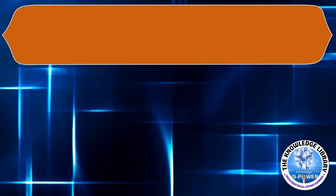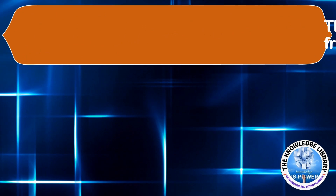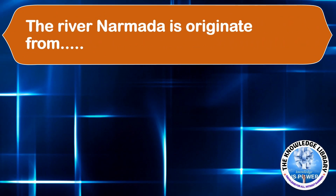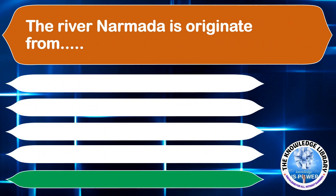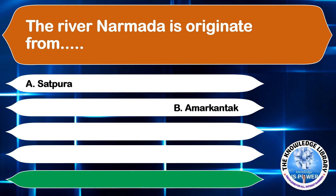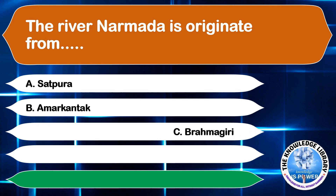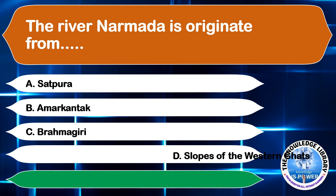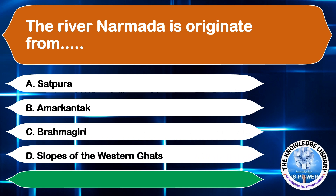The river Narmada originates from: A. Satpura, B. Amarkantak, C. Brahmagiri, or D. Slopes of the Western Ghats. The correct answer is option B, Amarkantak.